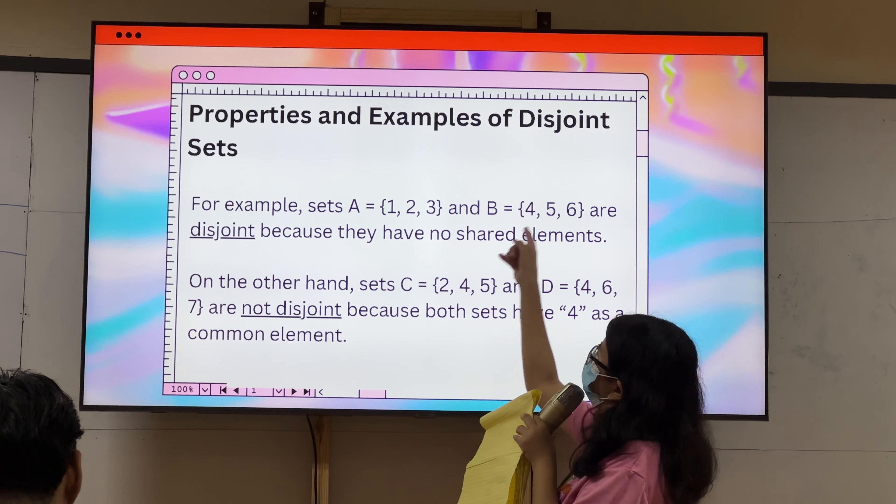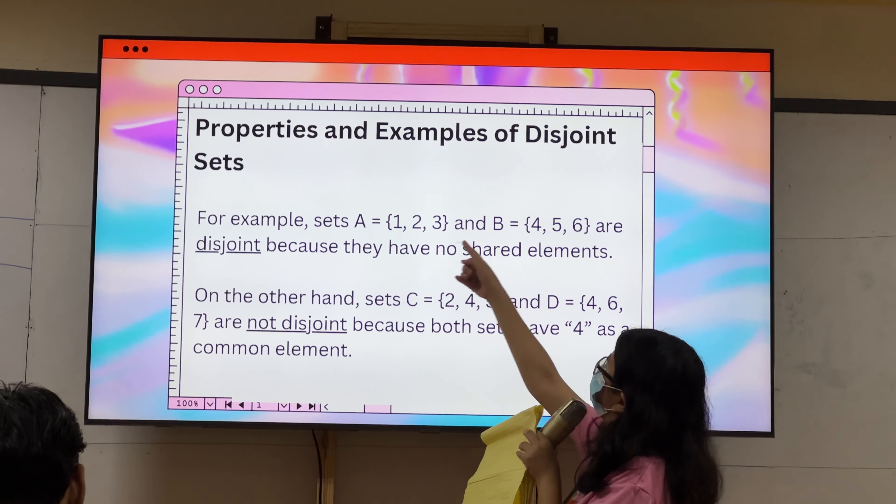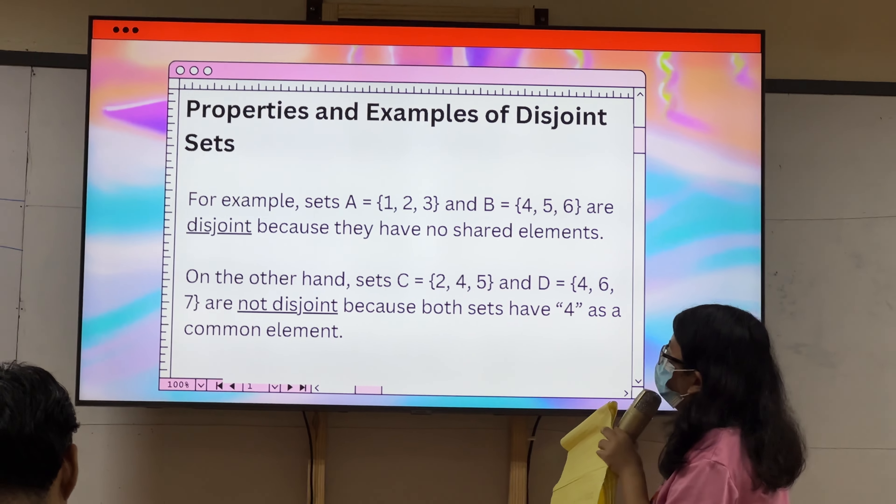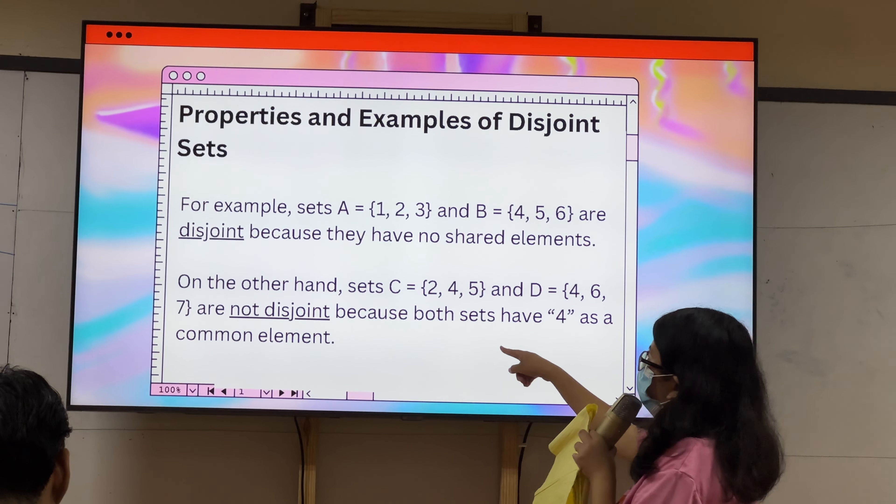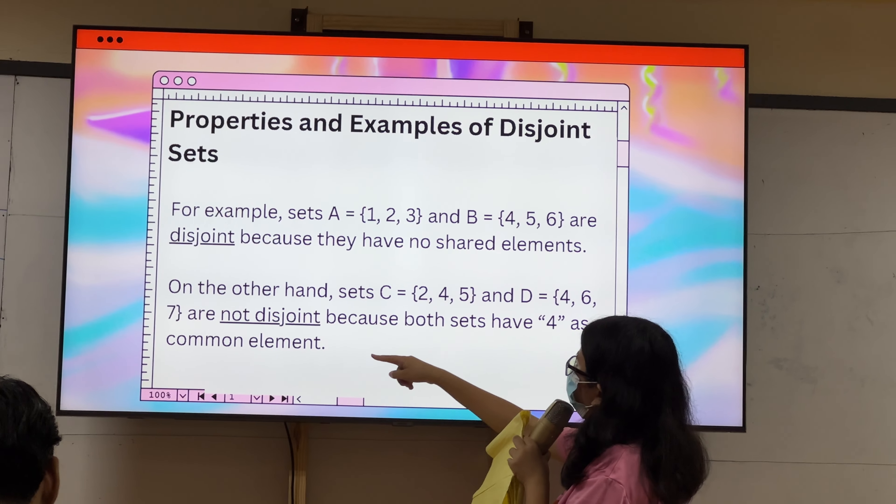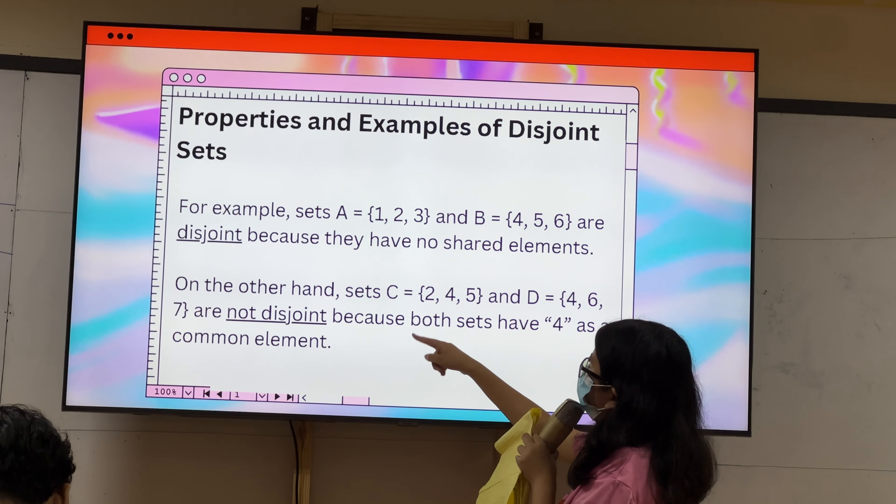Properties and examples of disjoint sets. Example, set A: 1, 2, and set B: 4, 5, and 6. Since, wala man sila, ita nang, same na mga elements, so, disjoint sets sila.